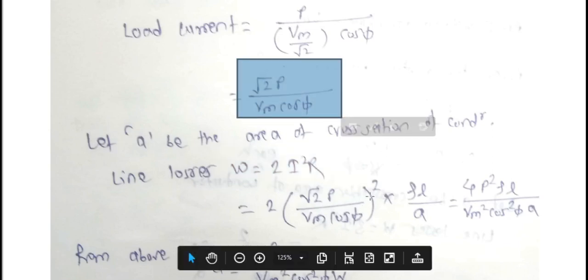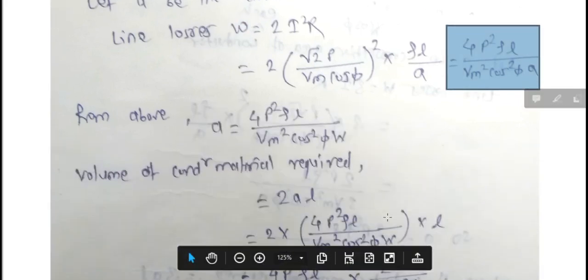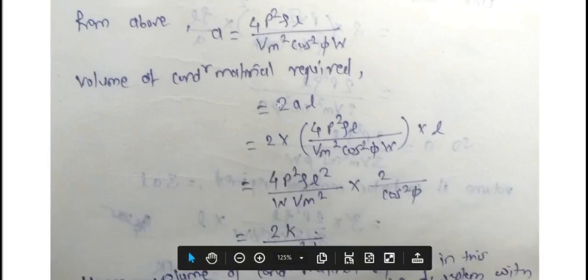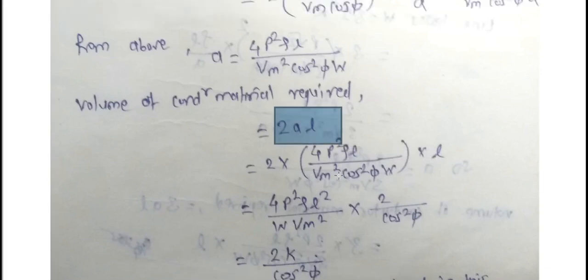Substituting R = ρl/A, the expression for W becomes W = 4P²ρl / (Vm²·cos φ·A). From this expression we find the area A = 4P²ρl / (Vm²·cos φ·W). The volume of conductor material required is 2·A·l, which gives 2 × [4P²ρl / (Vm²·cos φ·W)] × l.